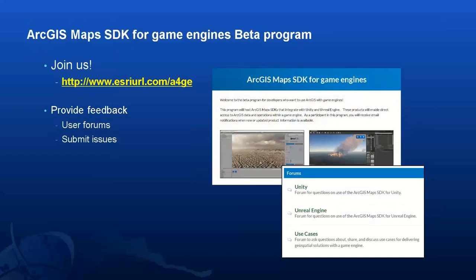We're currently targeting the first beta release in about two weeks, so you should get deliverables through our beta program. To get access to these products, you'll need to join the beta program using the link provided. Anyone who's a member will be notified when the first beta is available. Any feedback on these beta products or questions on our developer efforts with game engines can be handled in the beta program's user forums, which are open and available today. Feel free to share details about use cases, submit bugs or enhancement requests, and we'll assess those as well.